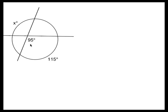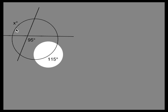Okay, two lines form an angle of 95 degrees and intercept arcs with measures 115 degrees and X degrees.